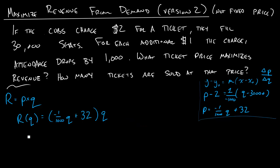And from here it's going to be the same as problems we've seen in earlier videos from this section. So R of Q is equal to negative 1 over 1,000 Q squared plus 32 Q.